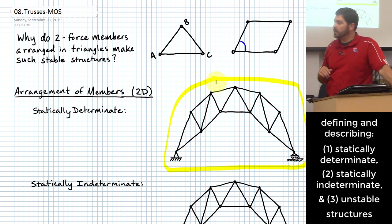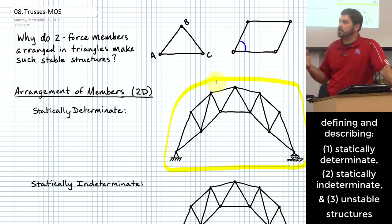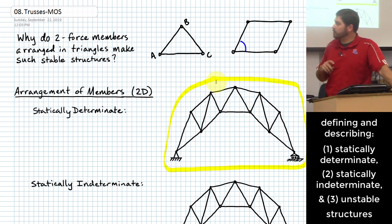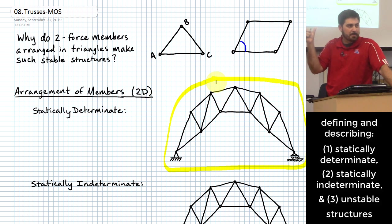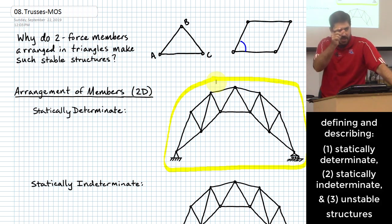I can do a force analysis independent of a deflection analysis, and anytime that's the case, we call that structure a statically determinate structure. I want you to know how you'd go about looking at a truss and knowing whether or not it is statically determinate. The big answer is we go back to math and ask: do we have enough equations to solve for all of our unknowns in that structure without calling upon equations about how much a member changes in length?